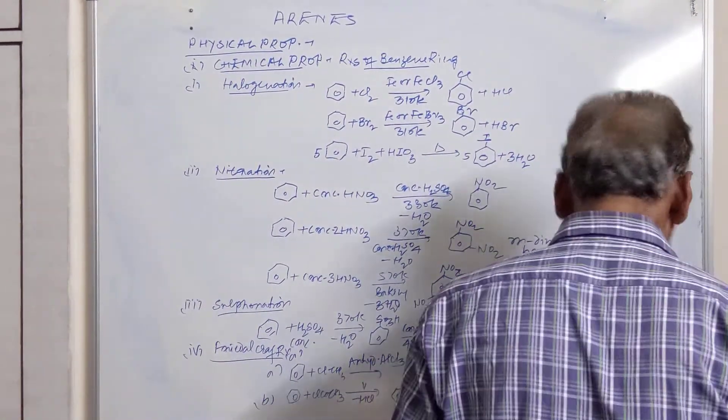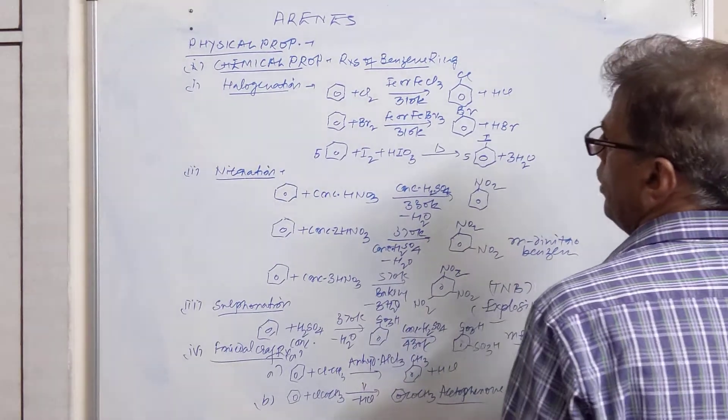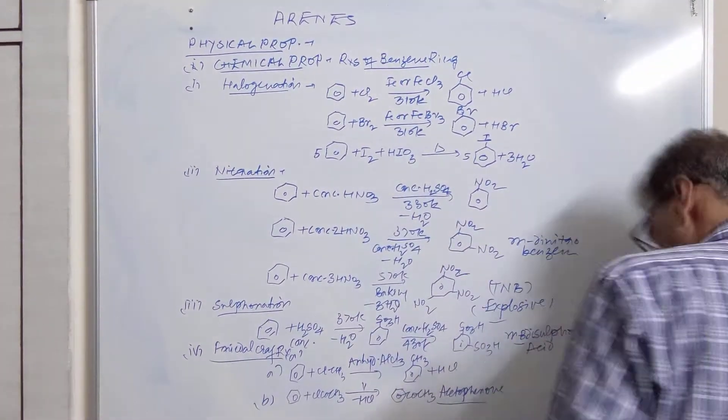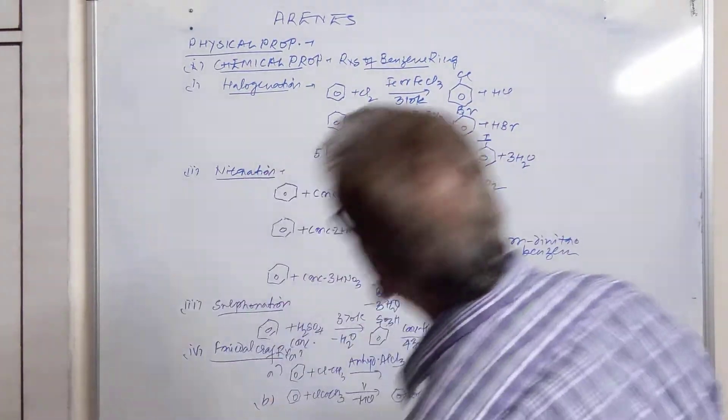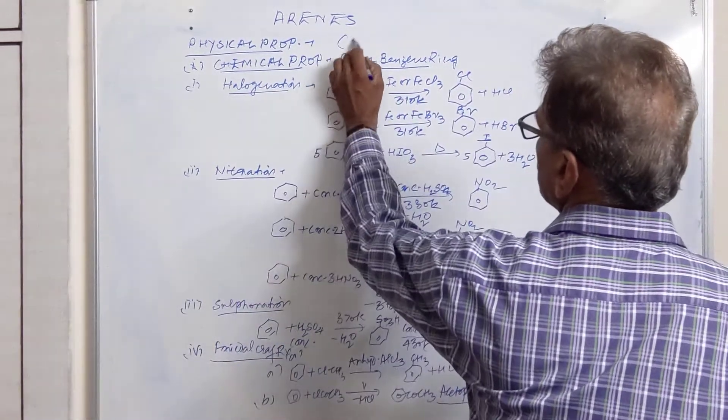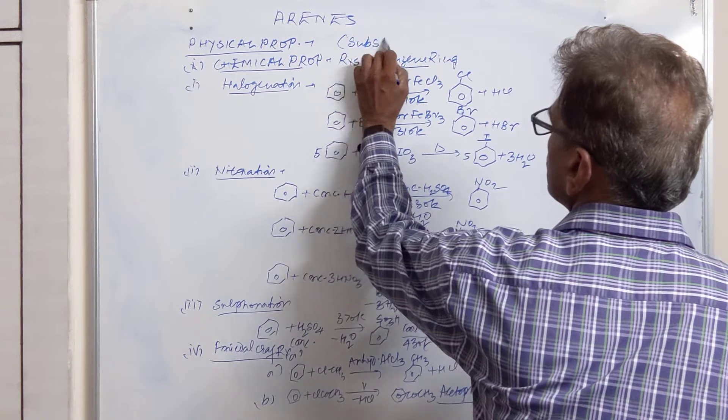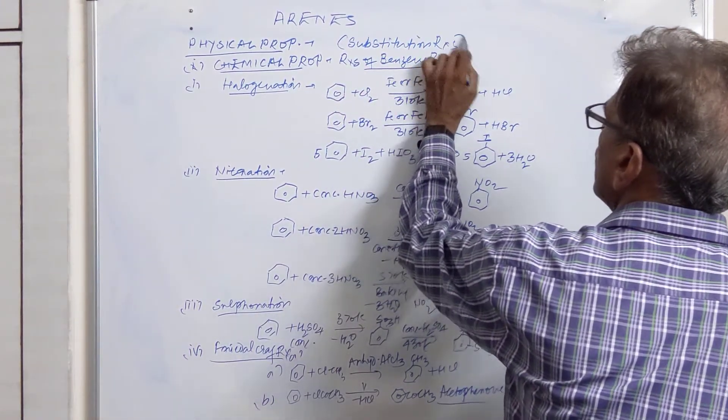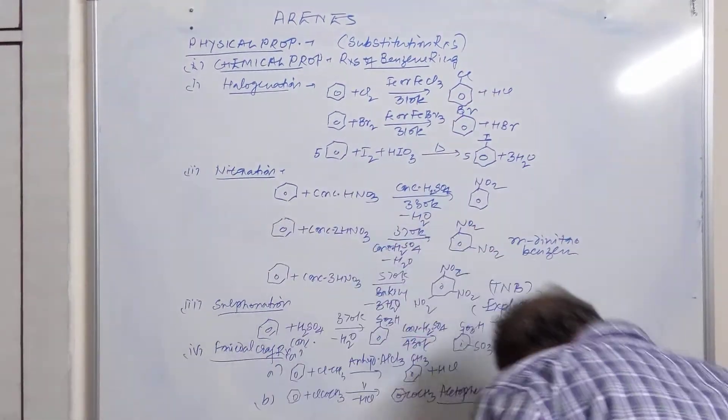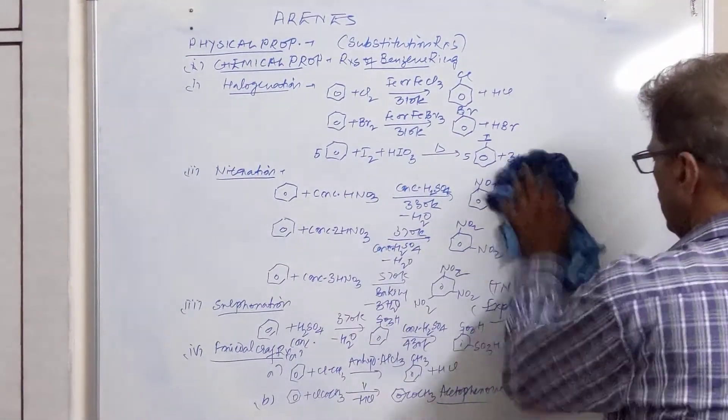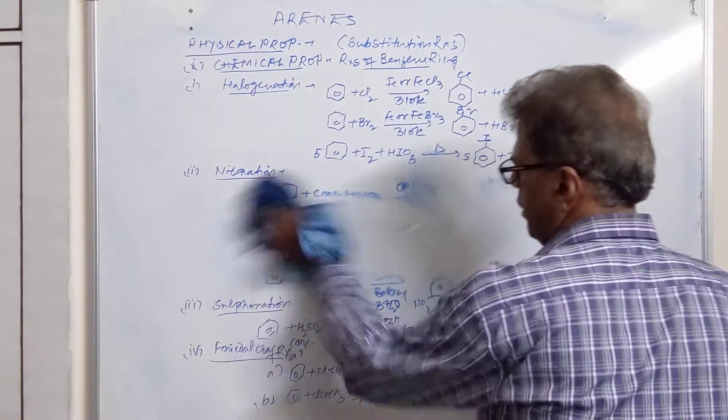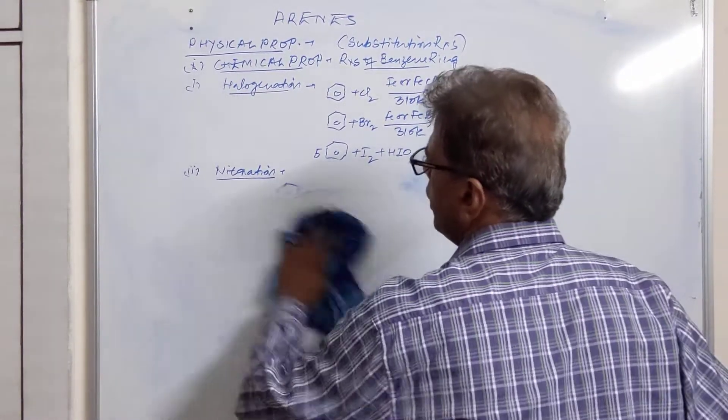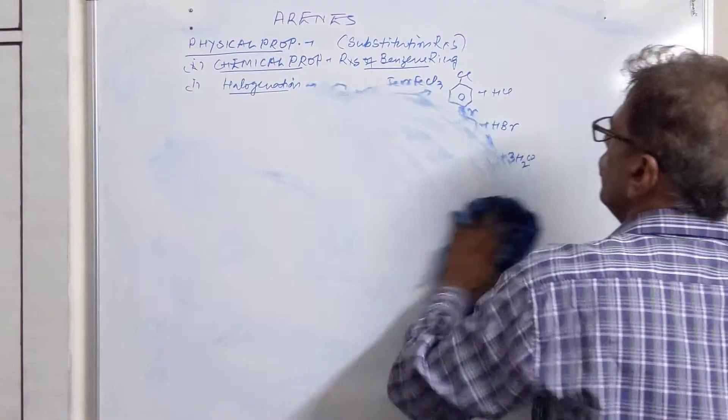Now these are the substitution reactions. Halogenation, nitration, sulfonation and Friedel-Craft reactions are actually substitution reactions. Now we will discuss addition reactions of arenes. We will take three reactions: addition of hydrogen, addition of chlorine, and addition of ozone.